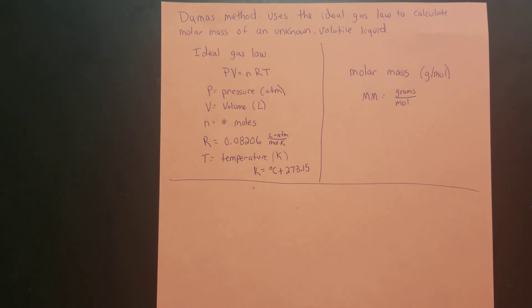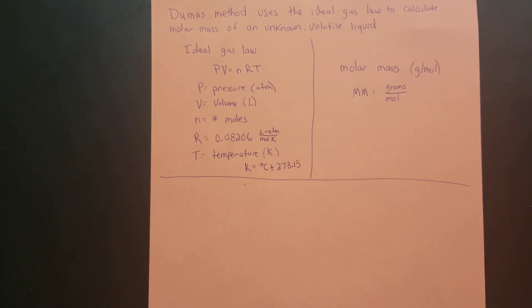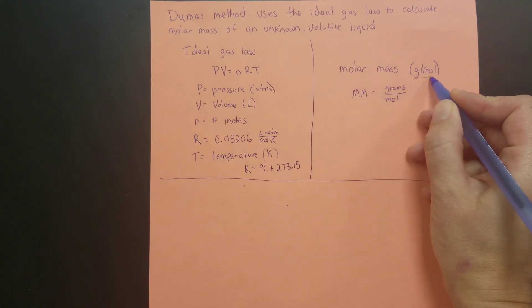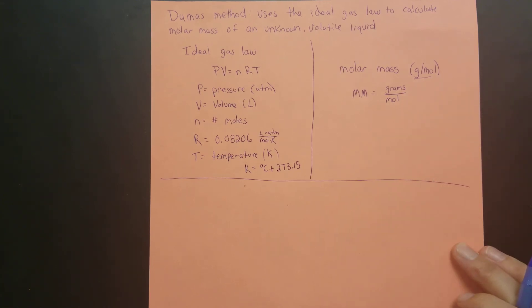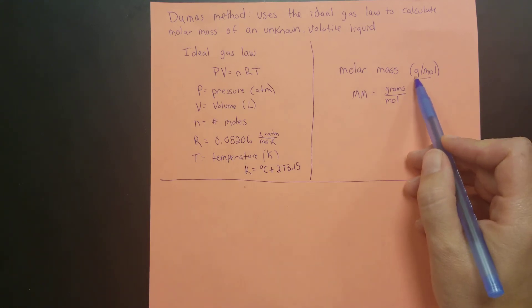So how are we using this equation to solve for molar mass? In the past, when we've done molar mass calculations, we used the periodic table — looking up masses of each element in the chemical formula and calculating. The units on molar mass have always been grams per mole. So instead of using the periodic table, we are going to use the ideal gas law because of those units.